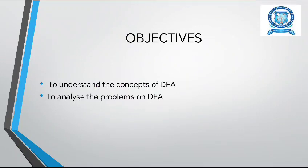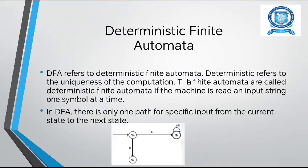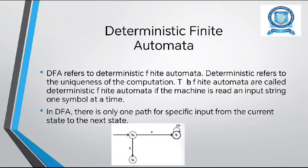Objectives: to understand the concept of DFA, and to analyze problems on DFA. A Finite Automaton is called a Deterministic Finite Automaton if there is only one path for a specific input from the current state to the next state. In this simple diagram, from state Q0 with input A, there is only one path going to Q2, and similarly from Q0 with input B, there is only one path going to Q1.